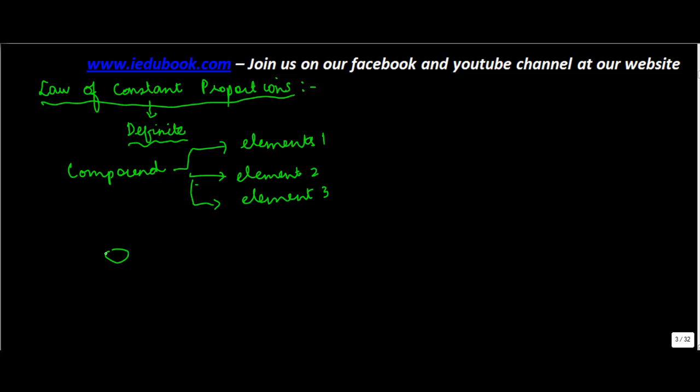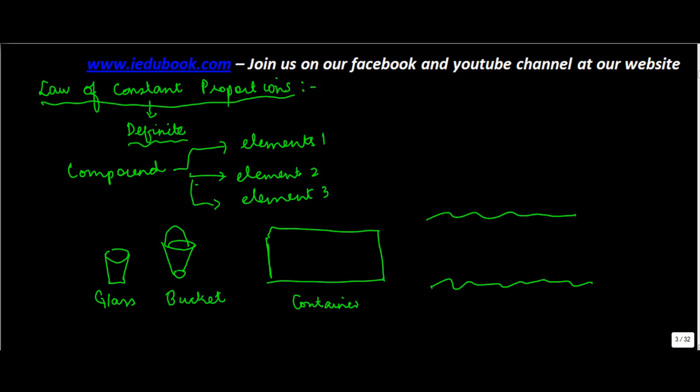Let's say for example you may have one glass of water, you may have one bucket of water, you may have a container of water, or you may have the entire sea which comprises of nothing else but water. So there is some amount of water here, there is some amount of water here, the container may have its own level of water which could be anything and the sea definitely is completely filled of water.